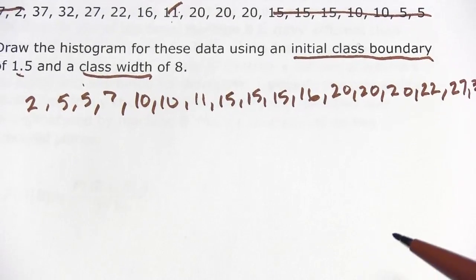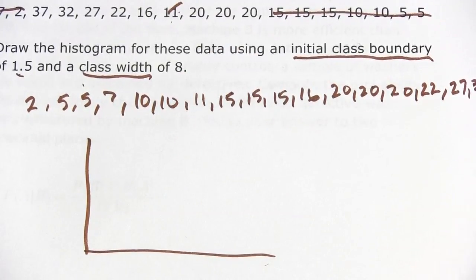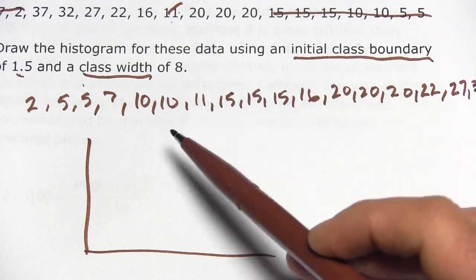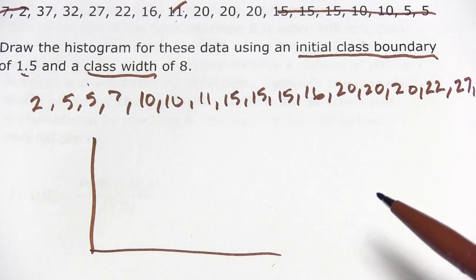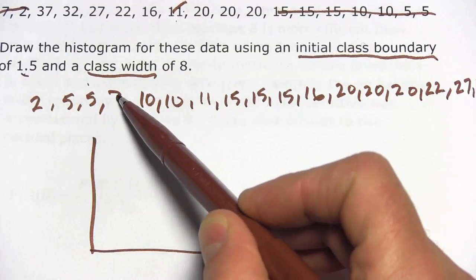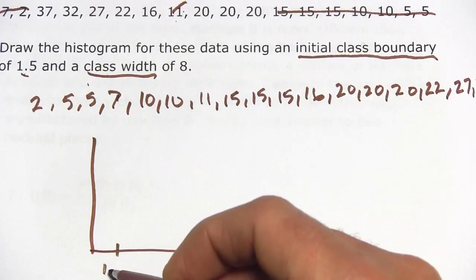Now, when we draw our histogram, let's set up our classes. It says the initial class boundary is 1.5. And you'll see that they'll go with 0.5s so that there isn't a data point here that falls right on the line of a class boundary. So let's call this 1.5.